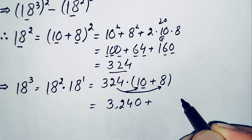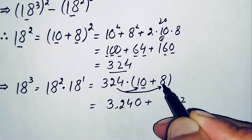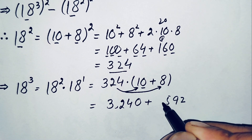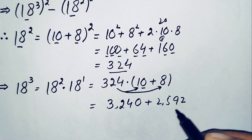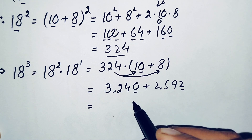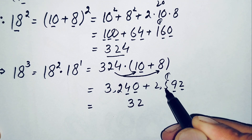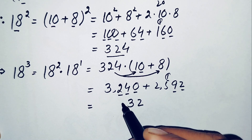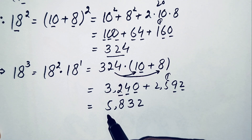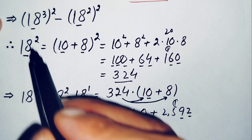Now multiplying 324 by 8: 8 times 4 is 32, carry 3; 8 times 2 is 16 plus 3 is 19, carry 1; 8 times 3 is 24 plus 1 is 25. So 324 times 8 equals 2592. Adding 3240 plus 2592: we get 5832. So 18³ = 5832.